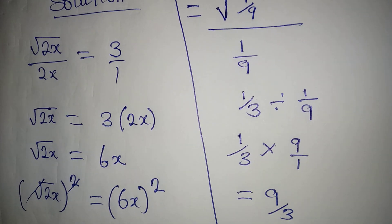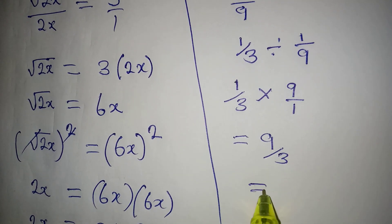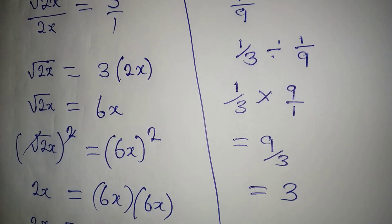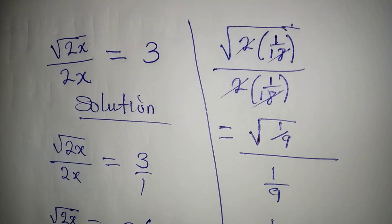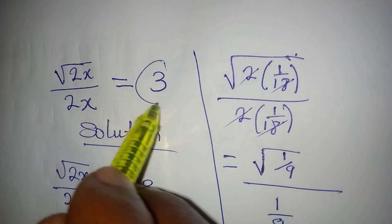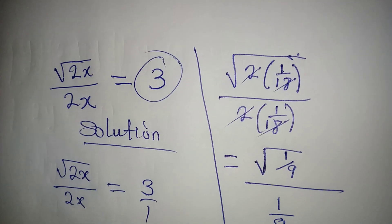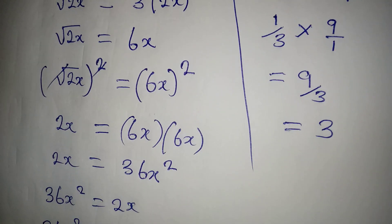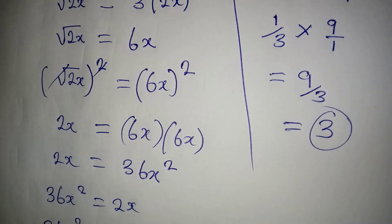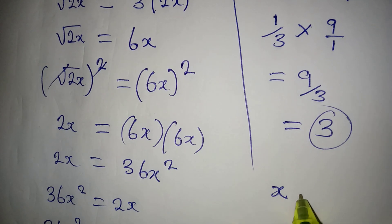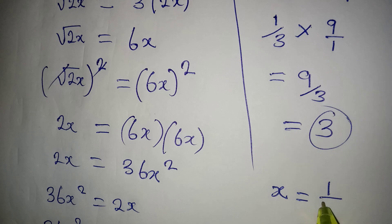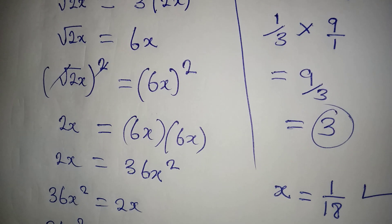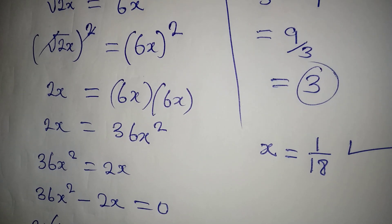And this way we are going to have 9 over 3, because 1 times 9 is 9, and at the end of the day we have 3. I remember it is 3 that we had on the right hand side. We are having the same 3, so this means that our x to be equal to 1 over 18 is very satisfying. Thank you for watching.